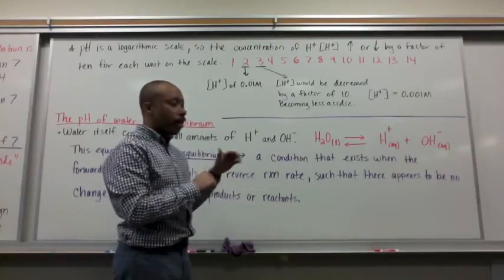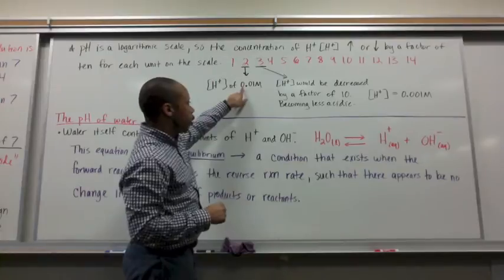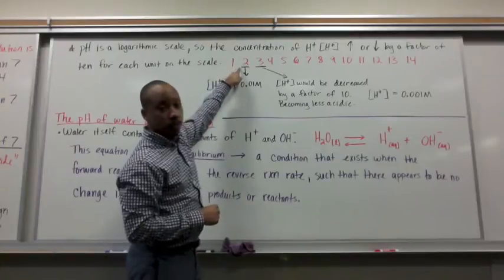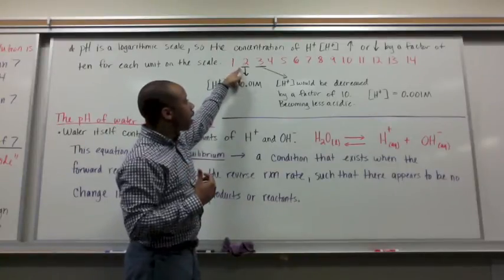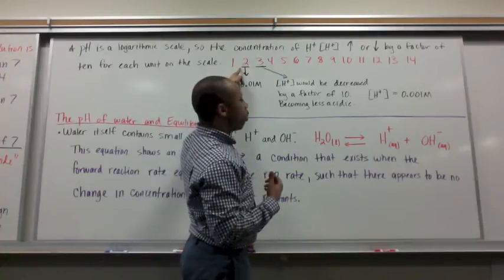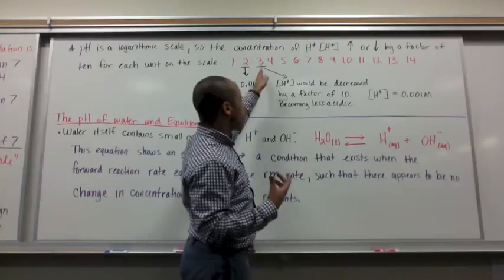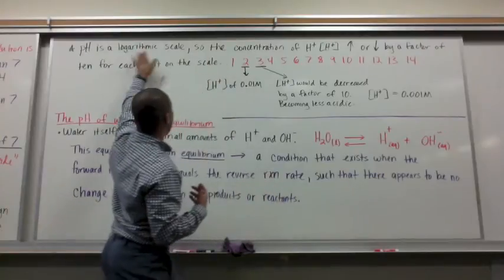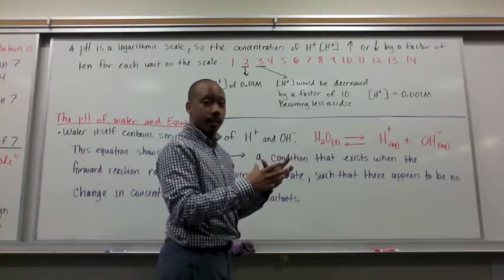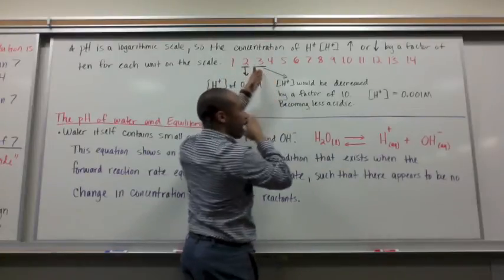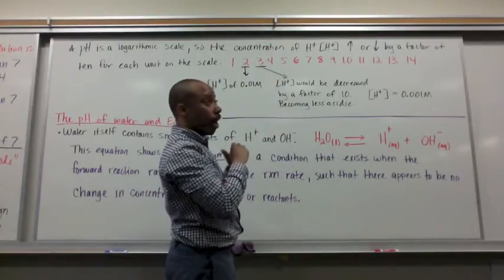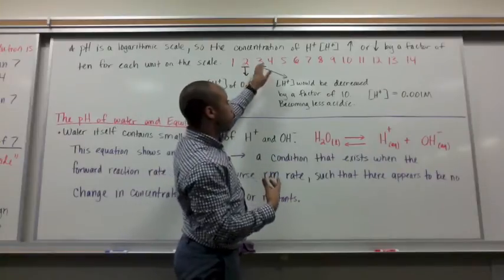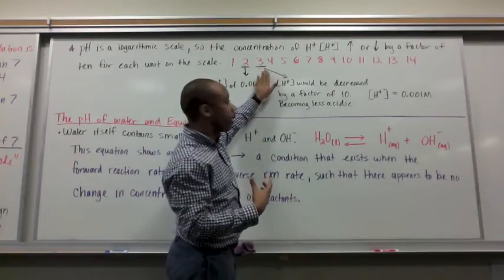So we just calculated in the last board that a solution that had a concentration of 0.01 molar had a pH of 2. That was our last calculation. Now say I want to know the hydrogen ion concentration of something that had a pH of 3. Well, one step on the logarithmic scale or the pH scale is a factor of 10. So we know when we go from 2 to 3 we're becoming less acidic. So we're probably going to have, or not probably, but we're going to have less H+ ions in solution. Less H+ ions means less acidic, which is more towards the basic side, increasing in pH.